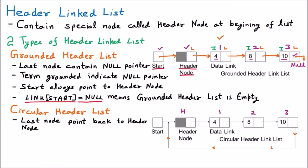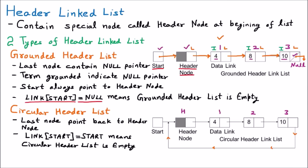The last node, which contains ten, points back to the header node — this is called the circular header link list. It is completely different from the grounded because in the grounded the last node pointed to null, but here the last node points back to the header node. There is a term: link[start] equals start means the circular header link list is empty. Every ordinary node has an info part and a link part, and the header node's link part points to the first ordinary node.